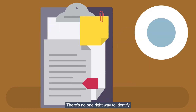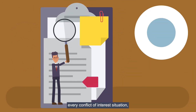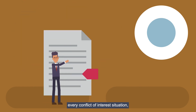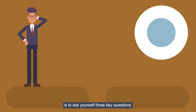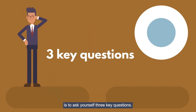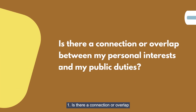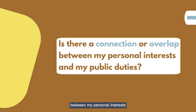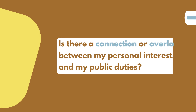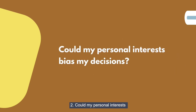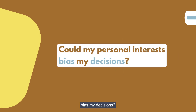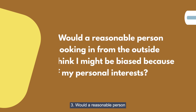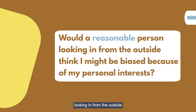There's no one right way to identify every conflict of interest situation, but a good starting point is to ask yourself three key questions. 1. Is there a connection or overlap between my personal interests and my public duties? 2. Could my personal interests bias my decisions? 3. Would a reasonable person looking in from the outside think I might be biased because of my personal interests?